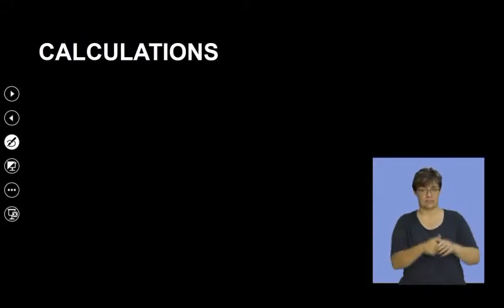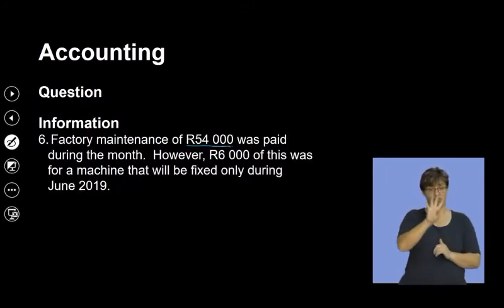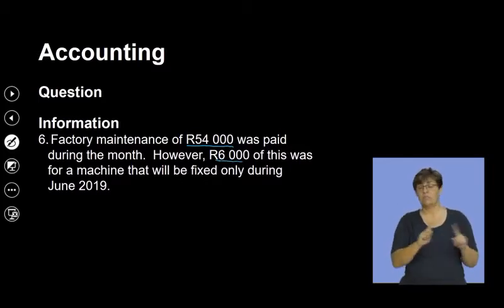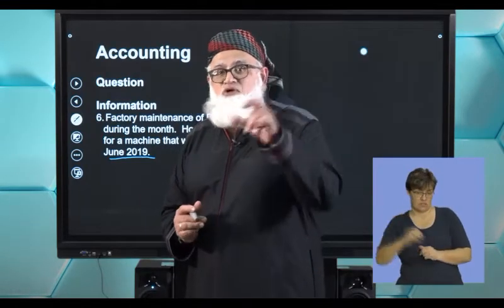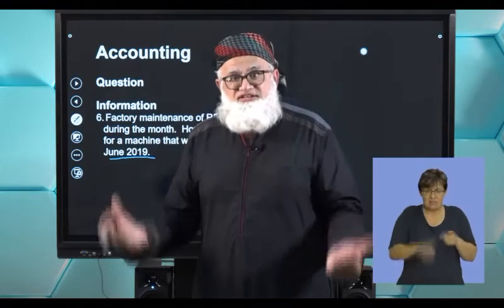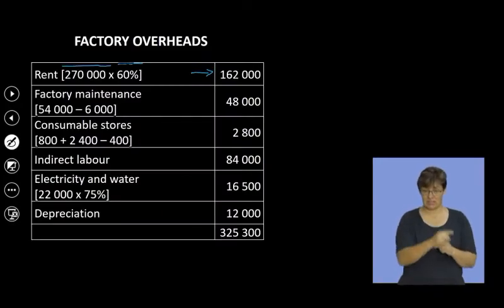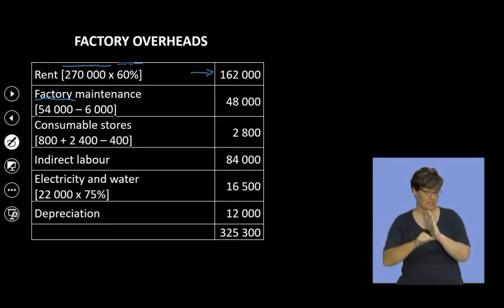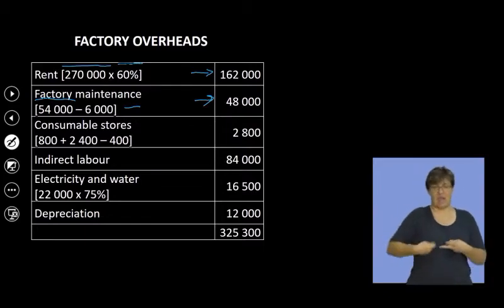Factory maintenance of 54,000 rand was paid during the month. However, 6,000 is for a machine that will be fixed only during June 2019 — meaning that 6,000 is not for this financial year and cannot be part of my factory overheads for this financial year. So: 54,000 minus 6,000 gives you 48,000 rand. We are only interested in this year's expenses as they relate to the factory.